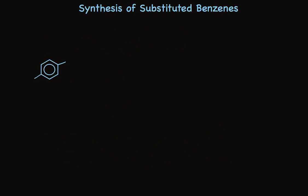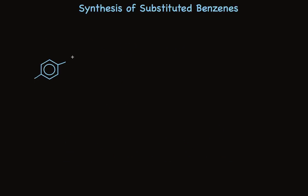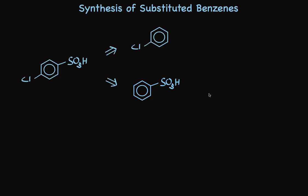Let's plan the synthesis of para-chlorobenzene sulfonic acid — here's our sulfonic acid group with para-chloro. There are two possible one-step precursors: we could consider putting on the sulfonic acid group, or alternatively it could be the chlorine we're putting on. The chlorine is an ortho-para director, so it would put the sulfonic acid group where we need it. The sulfonic acid group, however, is a meta-director — no chance.